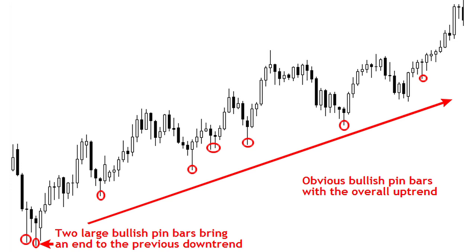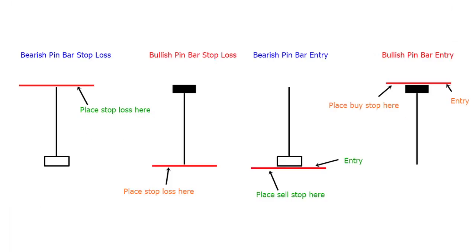The most basic way to trade a pin bar is to place the stop loss level at the extreme of the wick and to place your entry level above the body in a bullish scenario or below the body in a bearish scenario. The target is set relative to the risk level based on the stop loss, and the target is also often set at a resistance level in a bullish scenario or a support level in a bearish scenario — basically a recent swing high or swing low.